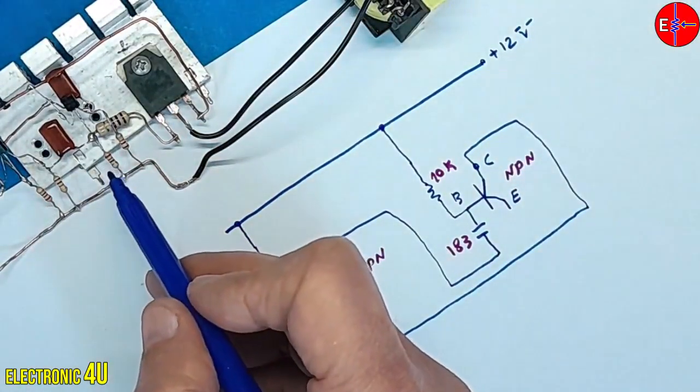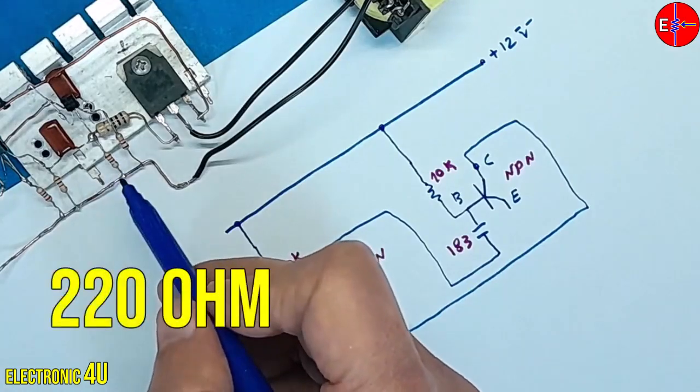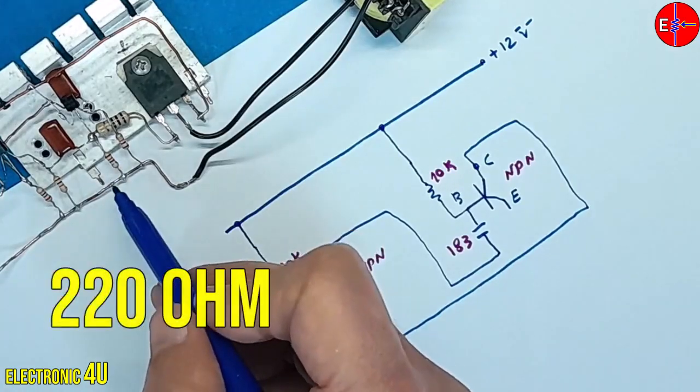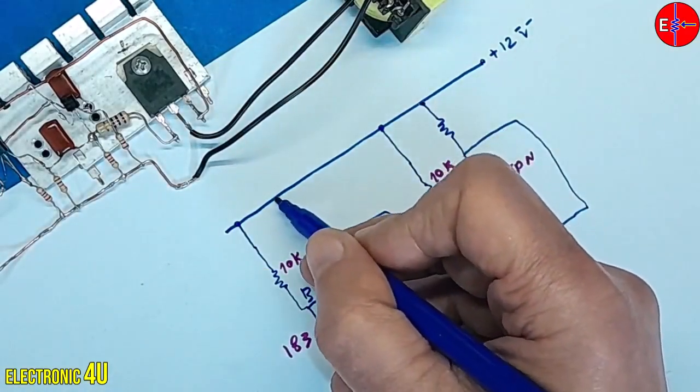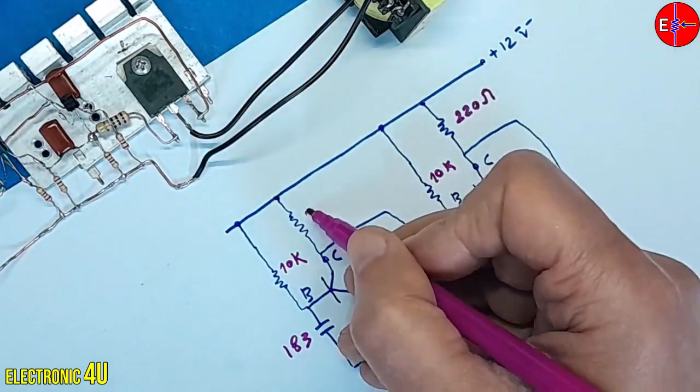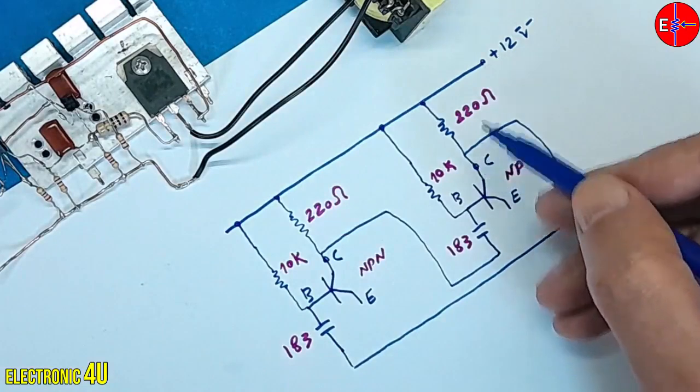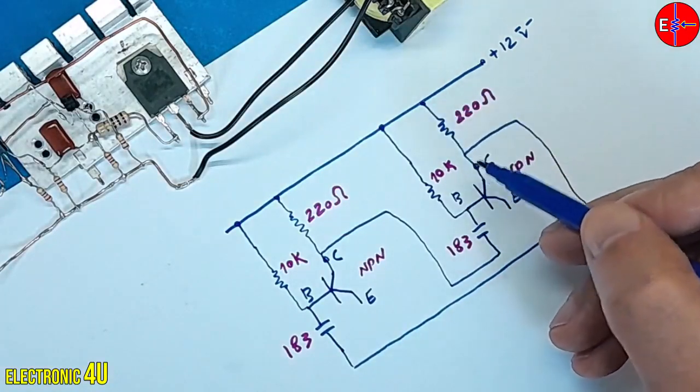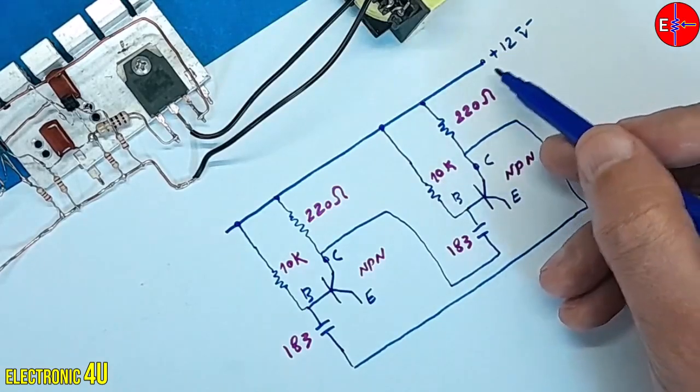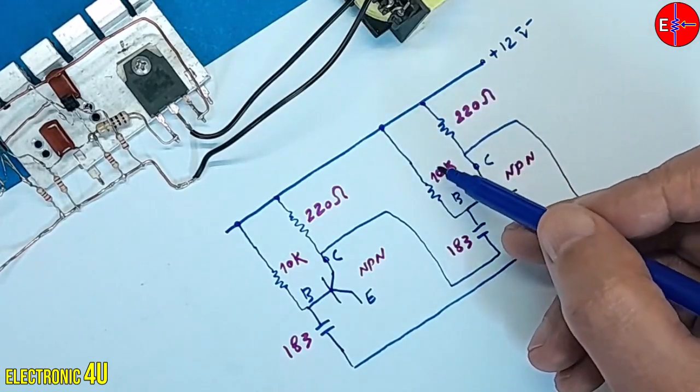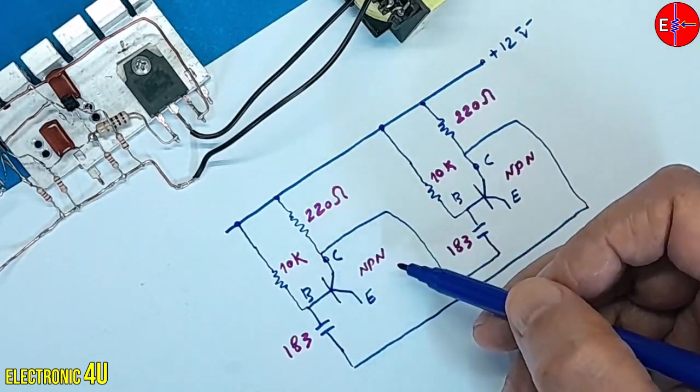The collectors are connected through a 220 ohm resistor to reduce the current, eventually reaching the voltage line. Voltage enters the collector through this line and the 220 ohm resistor. This voltage, via the 10 kilo ohm resistor, activates the transistor. The subsequent transistor follows the same principle.